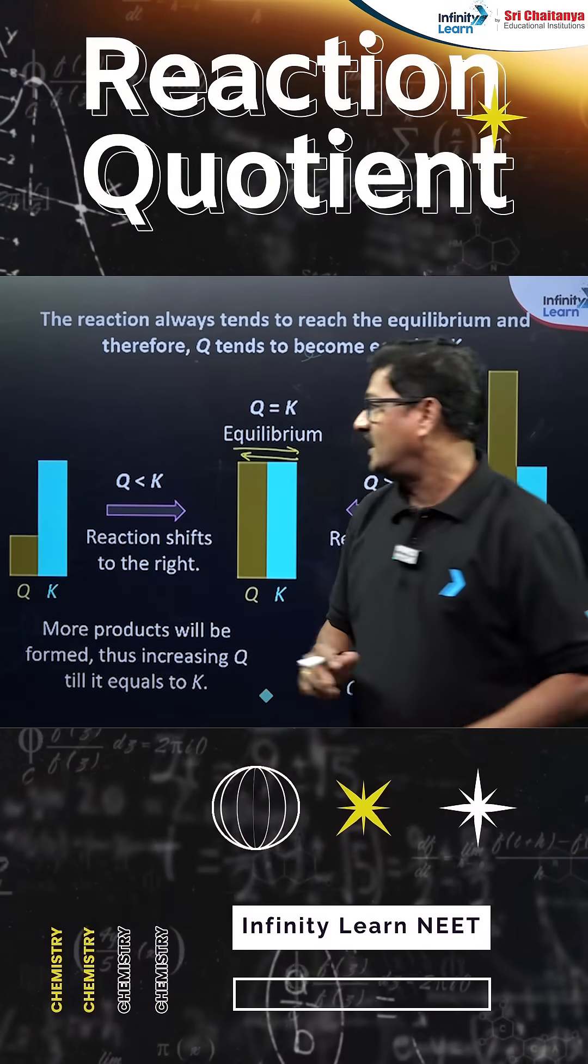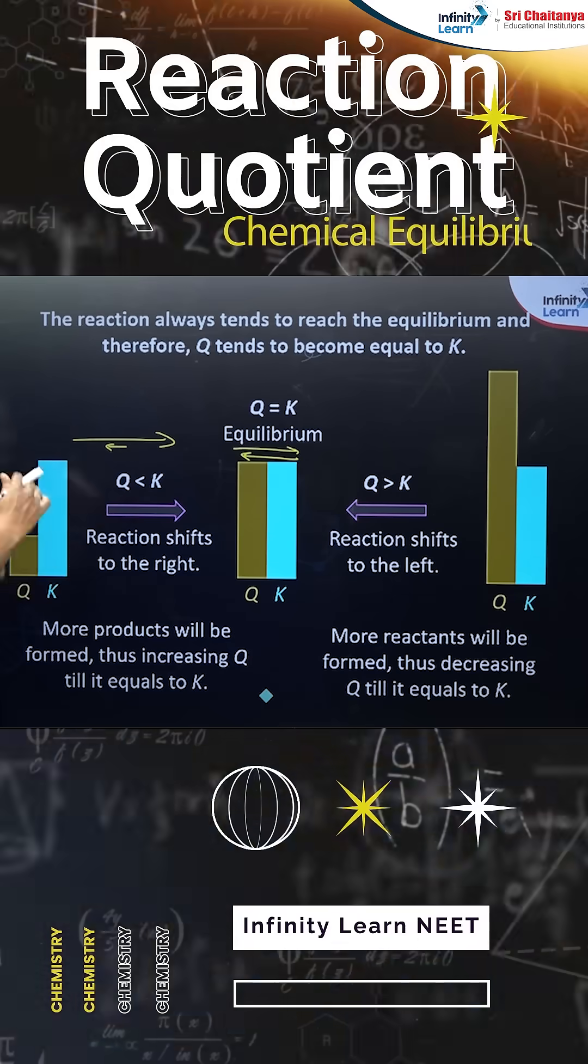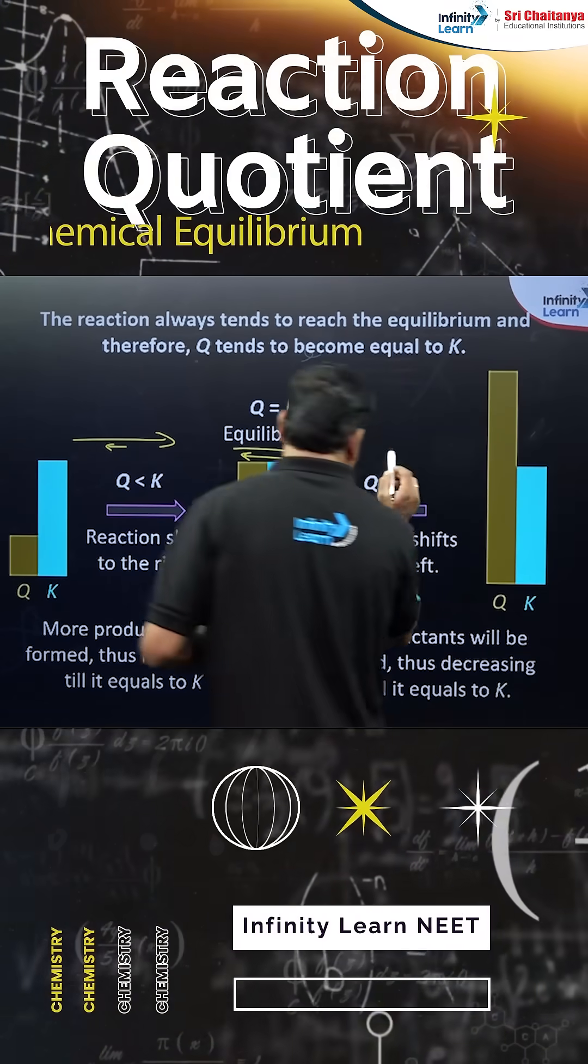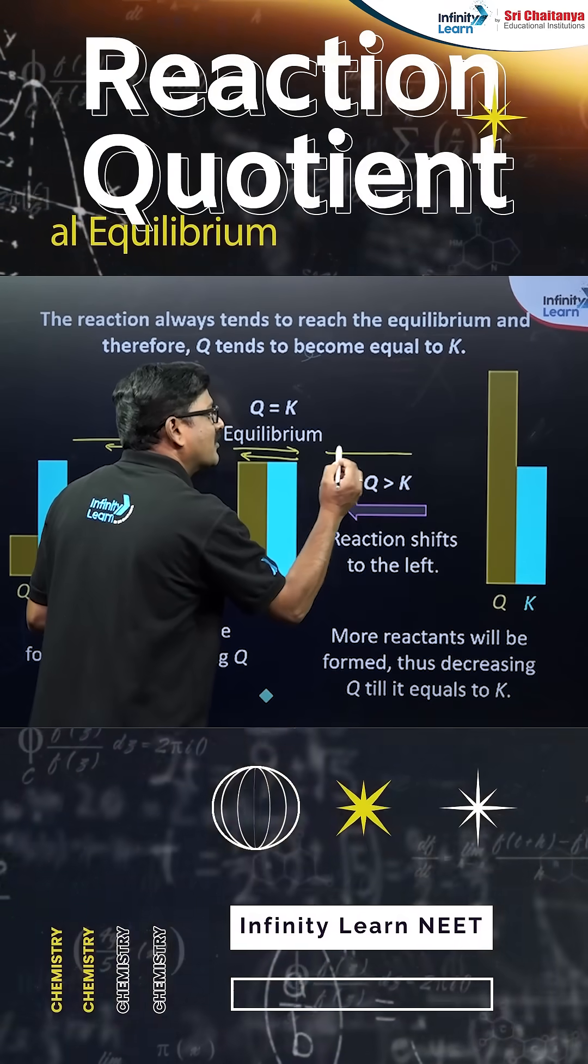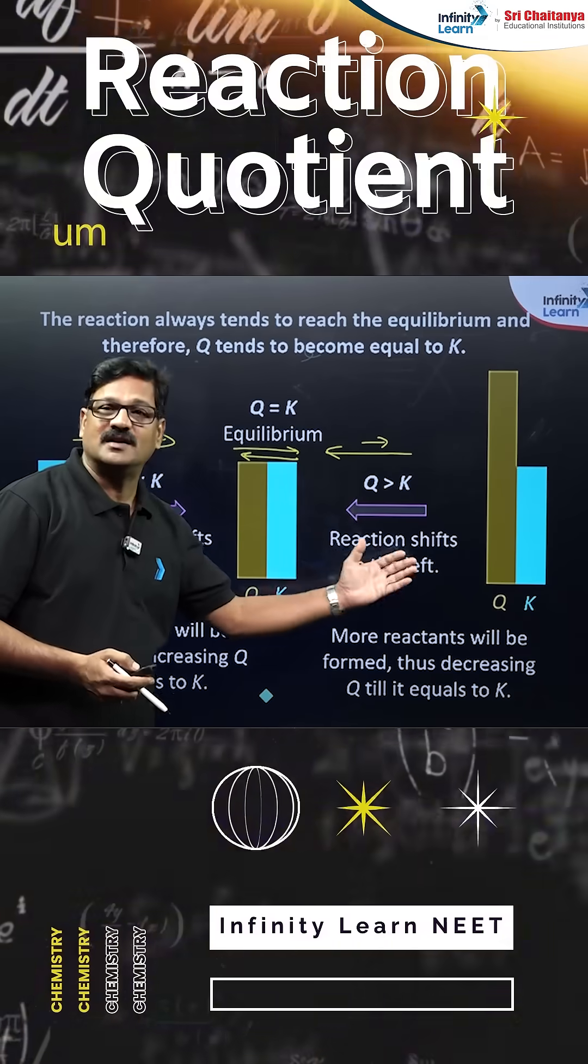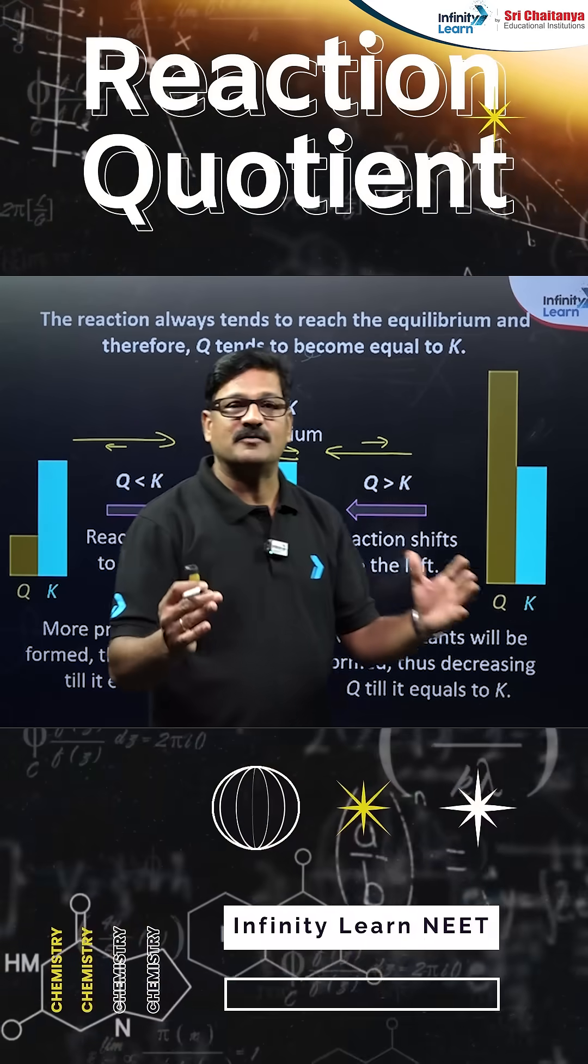If Q is greater than K, the backward reaction is favored over the forward reaction, so more reactants will be present on the reactant side. This much valuable information you can gather from the reaction quotient.